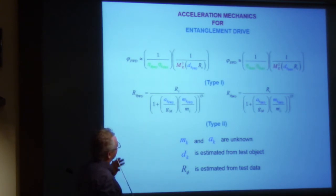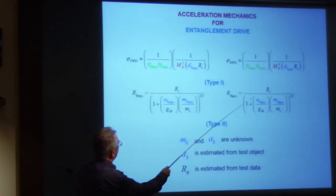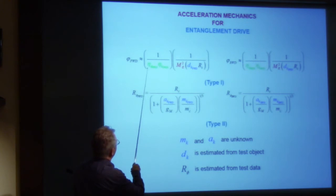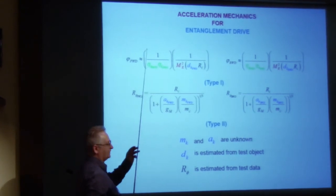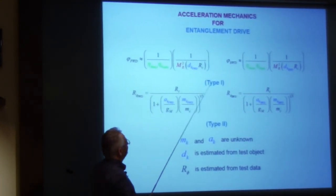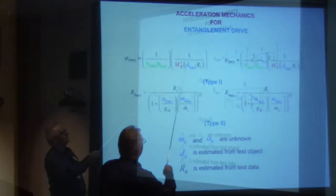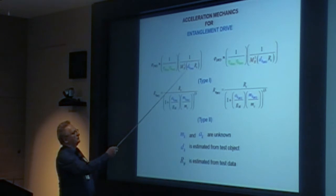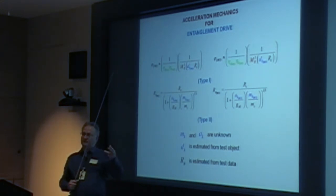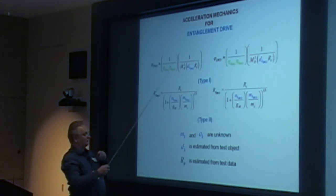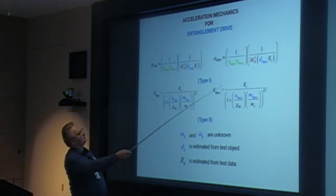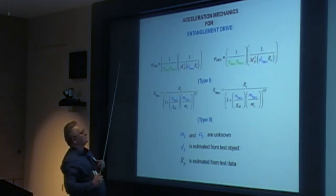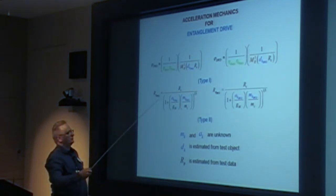I'm calling this the entanglement drive. The equations come out for forward and backwards — they're both the same form. These geometric parameters tend to be factors of pi. This is the distance something moves in your system for the forward direction and the backward distance. If the geometric parameters are the same, you have no force — you have to set up a system where they're different.